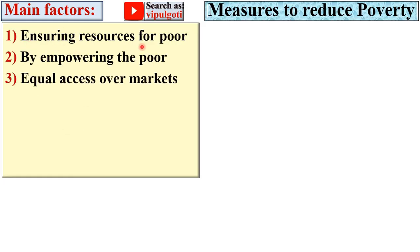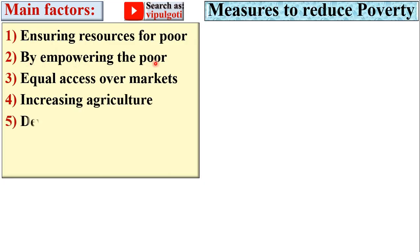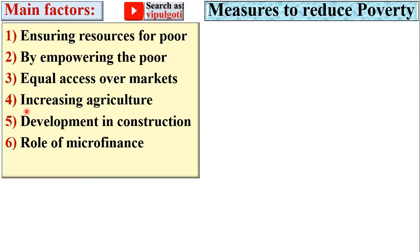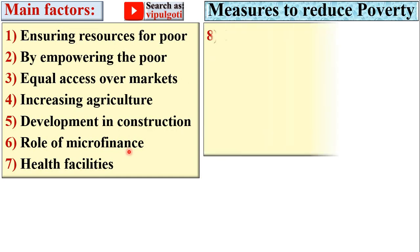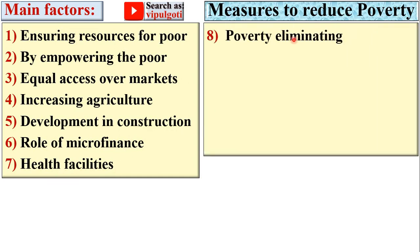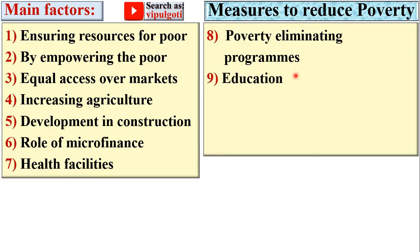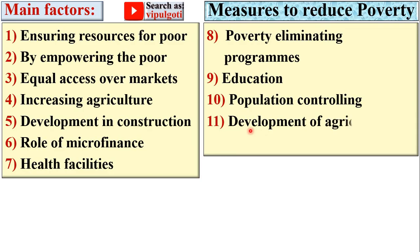The measures to reduce poverty include: ensuring resources for the poor, empowering the poor, equal access over markets, increasing agriculture, development in construction, role of microfinance, health facilities, poverty eliminating programs, education, and population growth controlling and development of agricultural land.